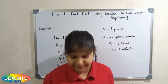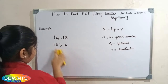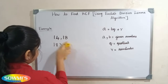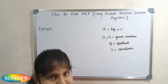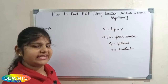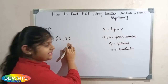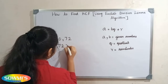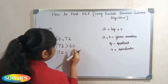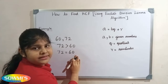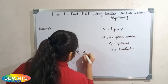Let us take another example. We can take 60 and 72. Here 72 is greater than 60, so now we have to divide 72 by 60. When we divide 72 by 60, our quotient will be 1 and our remainder will be 12.